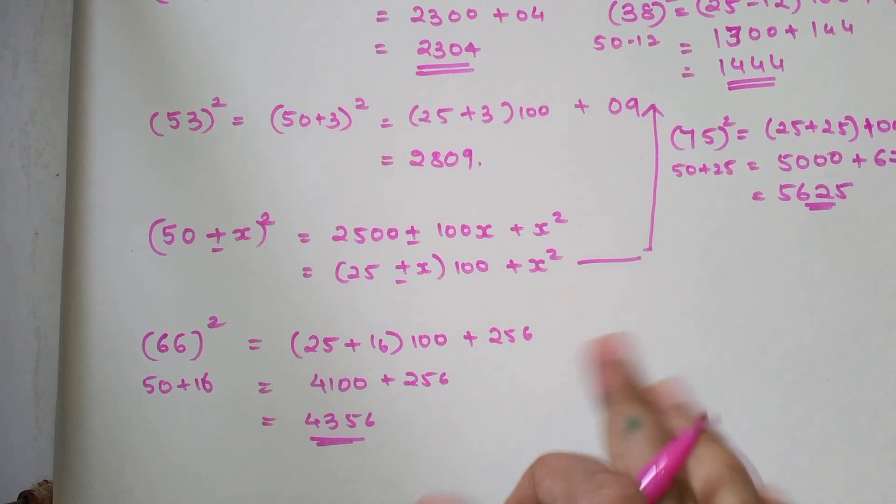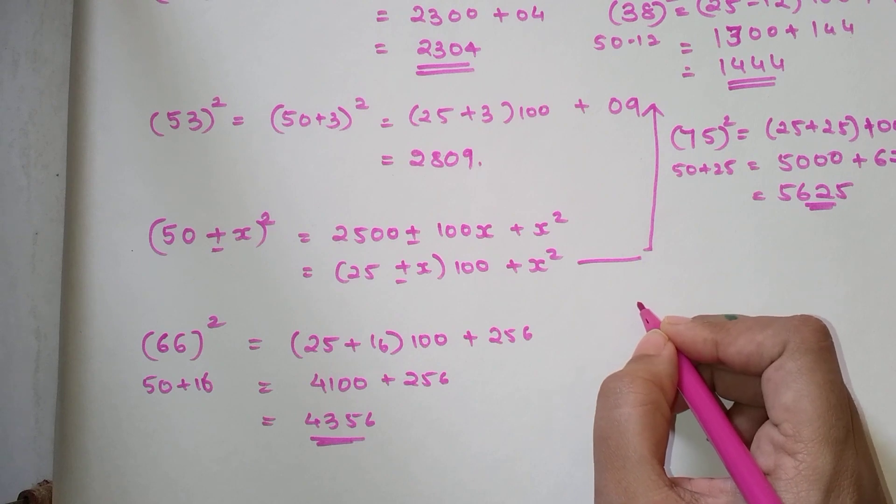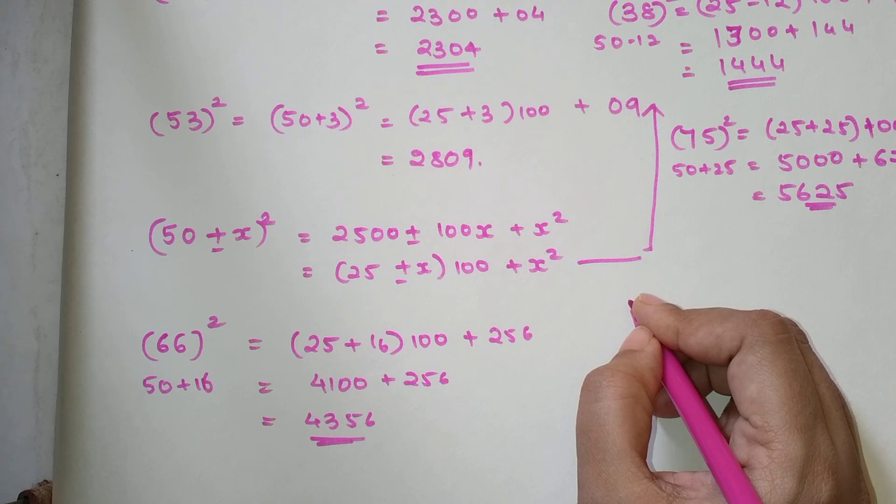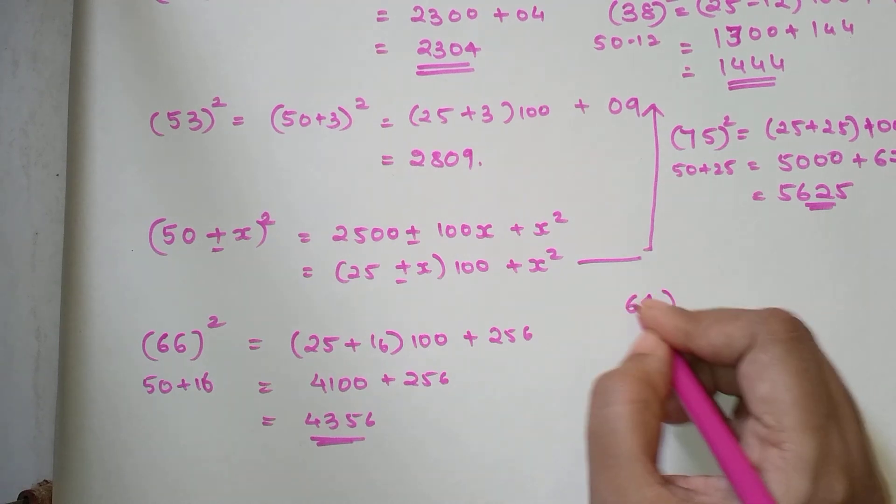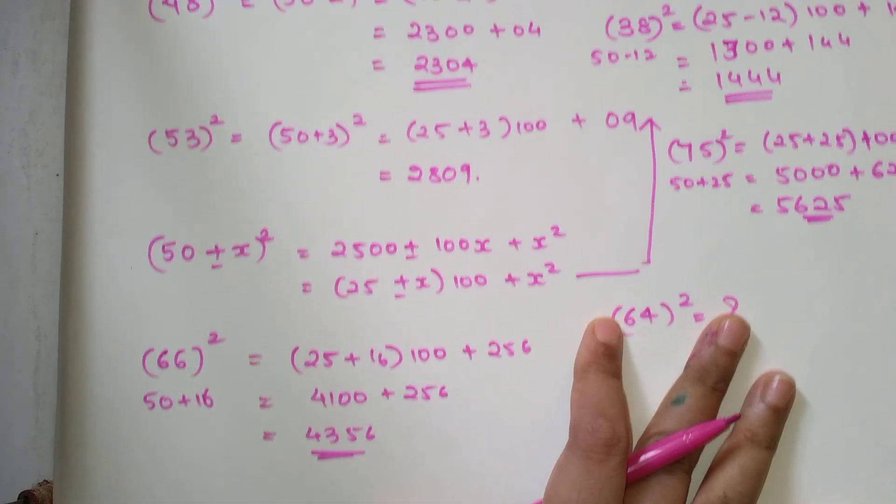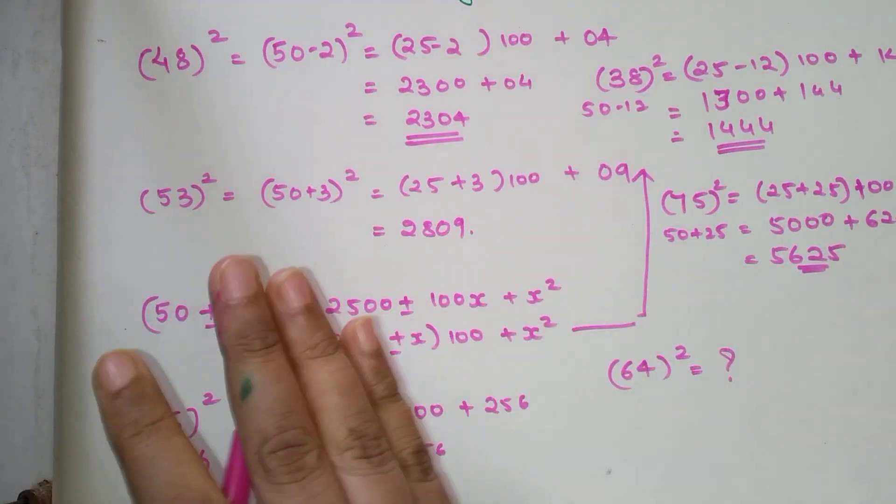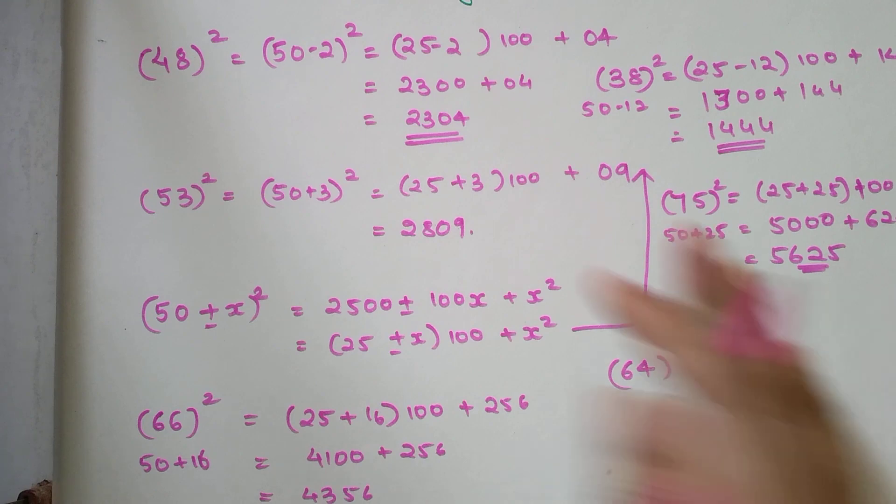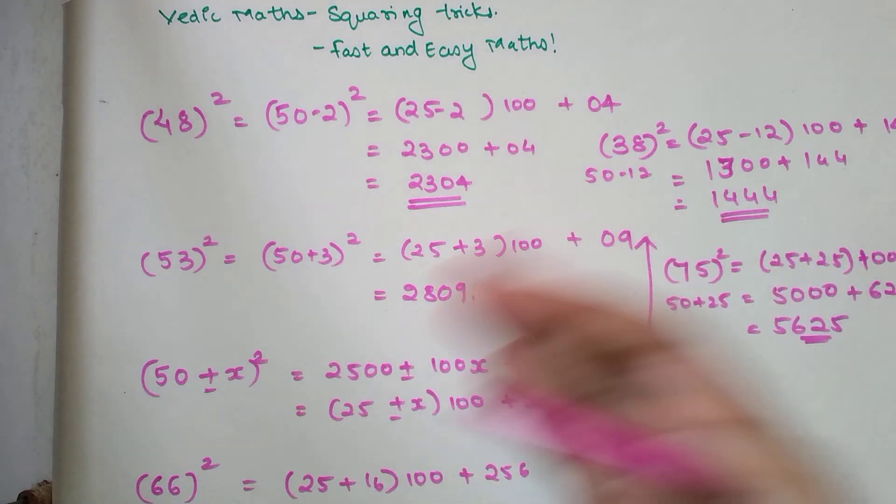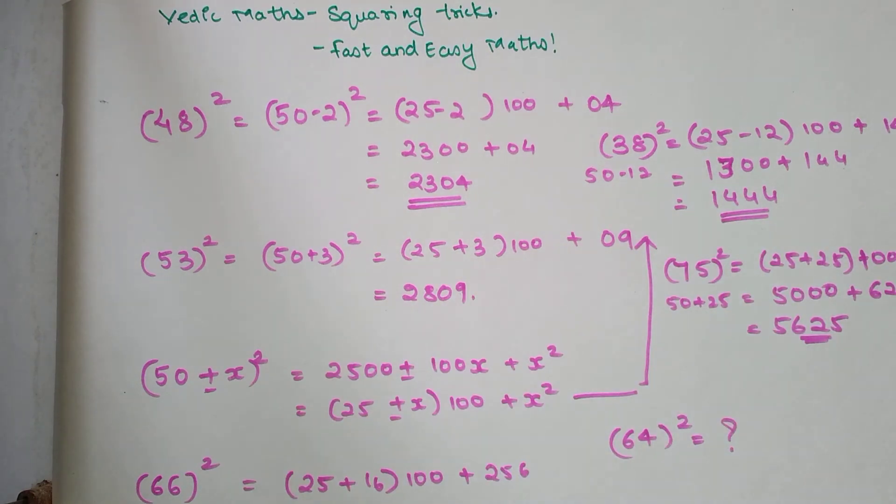So now, again, time has come for me to put a question for you. So tell me, what will be the answer of 64 square? Please use the method shown in this video only. Trust me, after doing this method for at least 10 to 15 times, this method will be imprinted in your brain and you will be able to do squaring of numbers in matter of seconds. So that's it for this video, students. I will see you in the next one. Thank you.